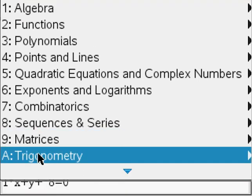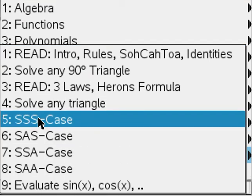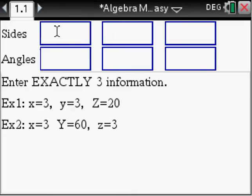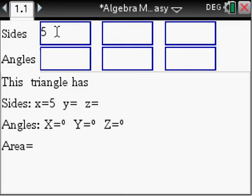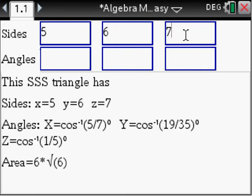Last one, let's go to trig. Solve any triangle, so let's say you have three sides: 5, 6, and 7. So it says this SSS triangle has sides 5, 6, and 7, it shows the angles, and area.